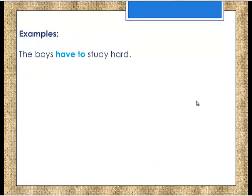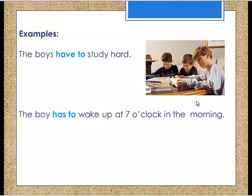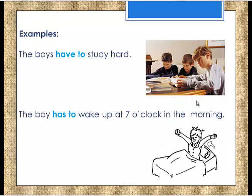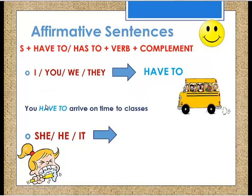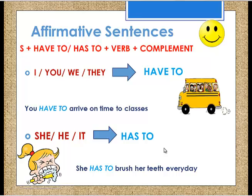For example, in the present or future: 'The boys have to study hard.' 'Have to' and 'has to' — the form would be: I, you, we, they use 'have to.' For example, 'You have to arrive on time to class.' This is obligation — it's a must, it's necessary. He, she, it use 'has to.' For example, 'She has to brush her teeth every day.'